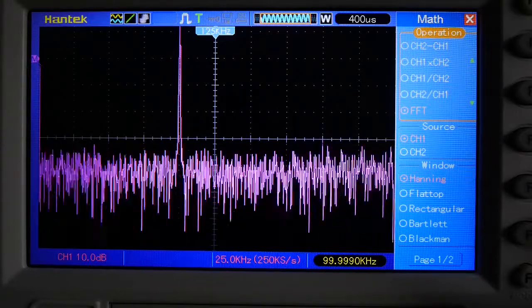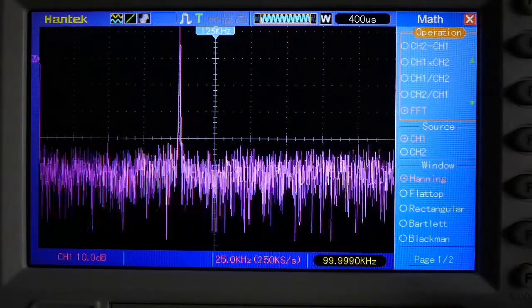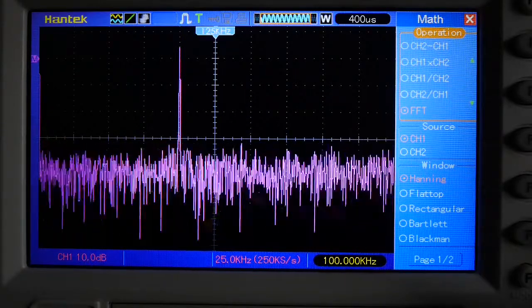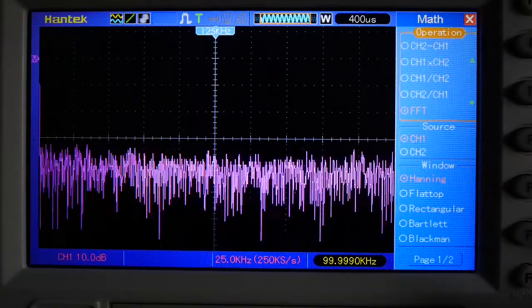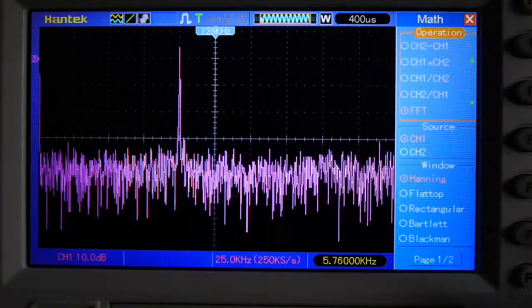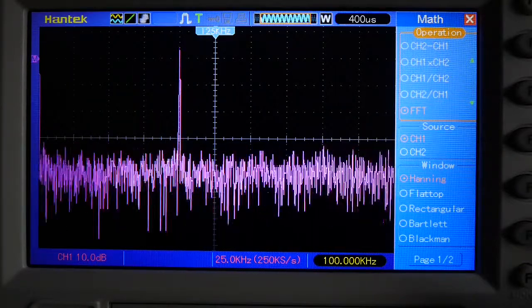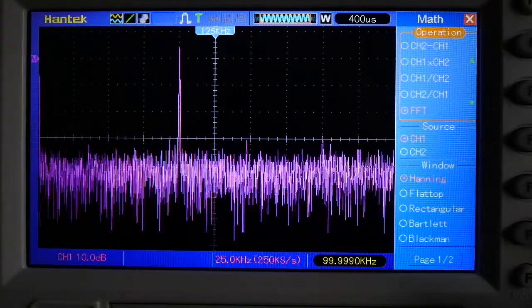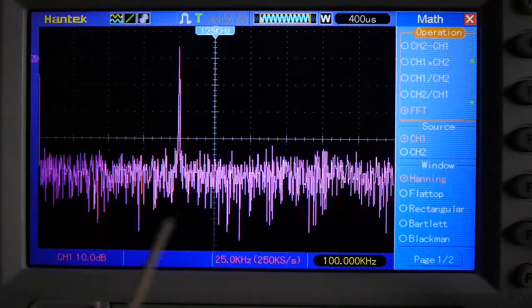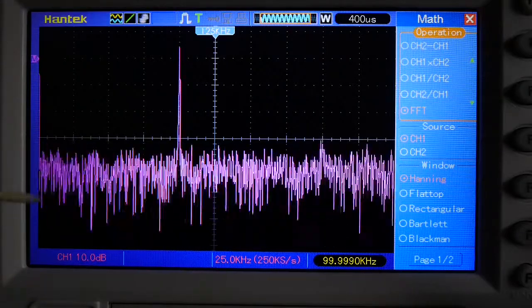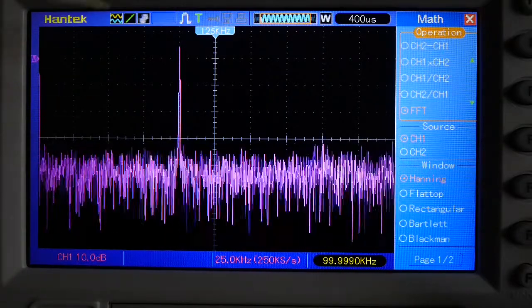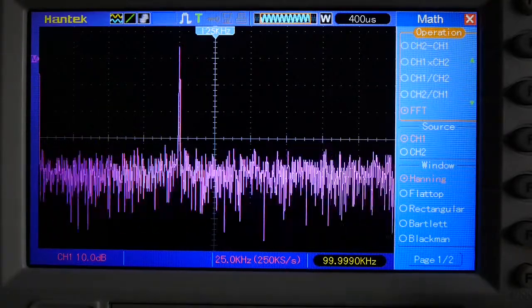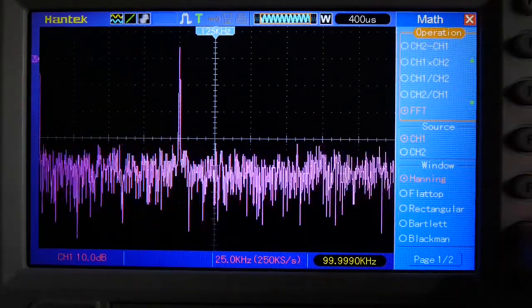There she is there, and that's actually the 100 kilohertz frequency. Now if I reduce the power output, the amplitude, you can see she drops down there, so that's down to one volt. And I turn it off, it vanishes. Turn it back on. So that's definitely the 100 kilohertz sine wave.